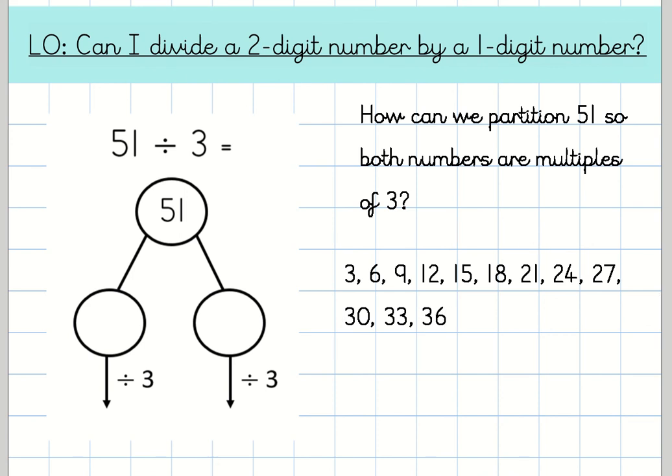Now what I'm going to look at first is the ones column of 51, because if we look at the three times table, there is a number that has one in its ones column, which is 21. And what do I need to add to 21 to make 51? I need to add 30. So I'm going to use both of those numbers for my partitioning, 30 and 21. Now if I do 30 divided by 3, I get 10. And if I do 21 divided by 3, I get 7. Seven threes make 21. And what we do then is we add them together, don't we? And we know that 10 plus 7 equals 17.